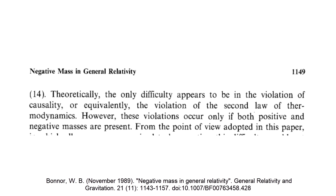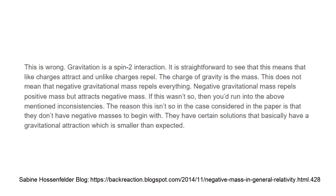Although there are proposals in which the equivalence principle only holds up to a sign, the arguments shown before, and especially the self-accelerating runaway motion, are usually used to support the idea that negative masses should not follow the predicted Newtonian or general relativity interaction for gravitational masses being equal to inertial masses, but an analogous interaction to the electrostatic force — like masses attract and unlike masses repel. This interaction, which is the same as considering inertial masses always positive and allowing gravitational masses to be negative in Newtonian gravity, gives up Einstein's equivalence principle and matches the interaction of a spin-2 field from quantum field theory, although there is no evidence for gravity to be a force mediated by a quantum field.